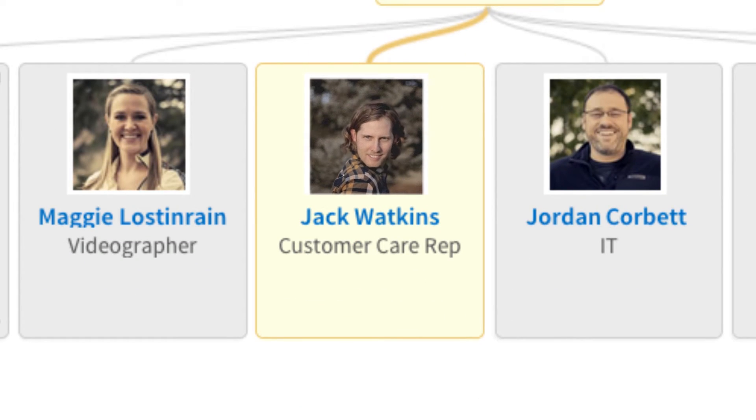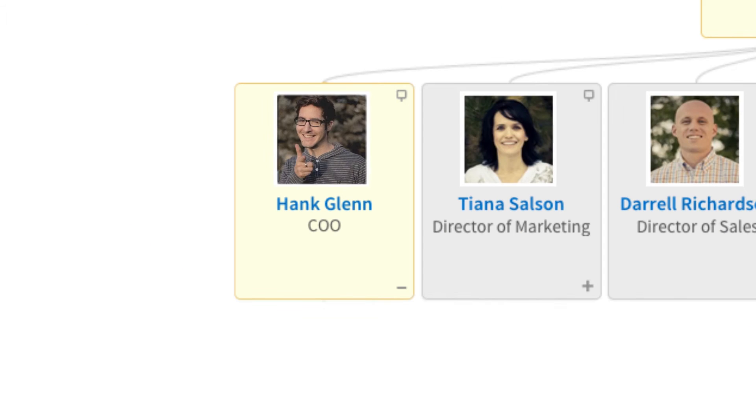And after Sarah approves Jack's request, Hank will also have to approve it. Think of it like this: sometimes employee requests need to be approved by multiple people, or even by someone who the employee normally doesn't report to on a day-to-day basis.